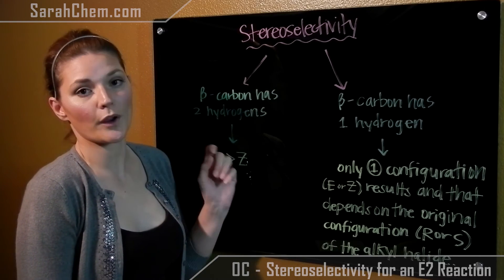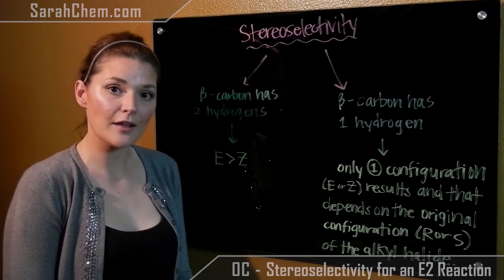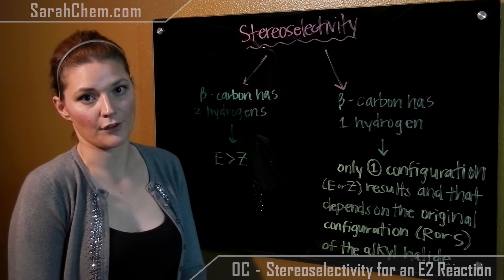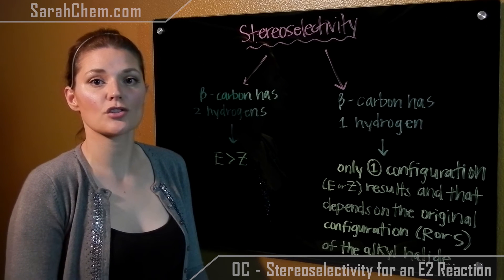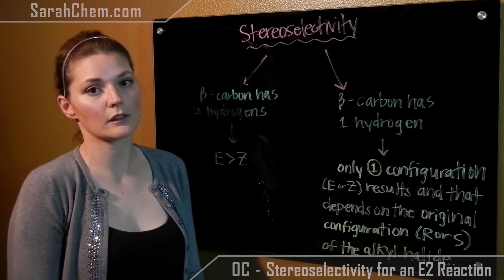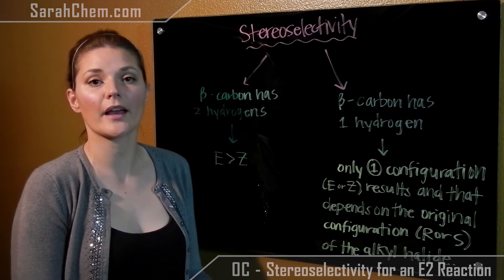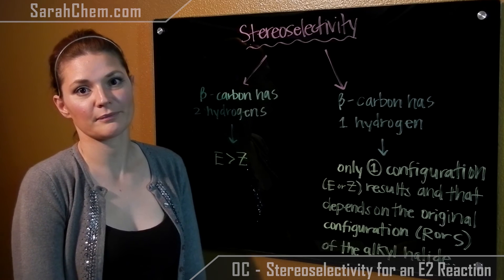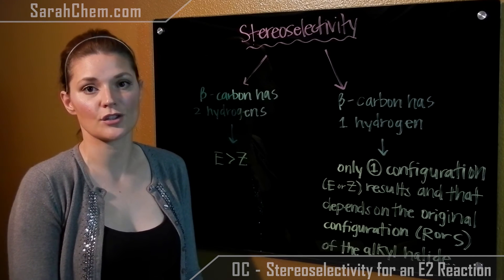In the case, however, where your beta carbon has only one hydrogen, you could form either the E or the Z — you will only form one or the other, and you can in fact form the Z. The thing that's going to actually determine which you will form is the configuration of your original alkyl halide. So if it's an R or an S, it will affect whether you get a major E or a major Z out of your overall reaction. Those are the things you have to keep in mind when predicting your product for an E2.